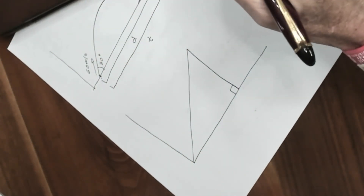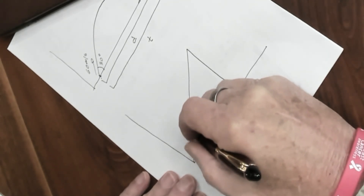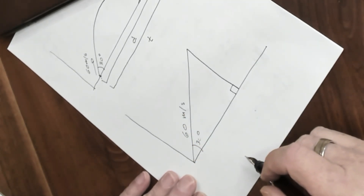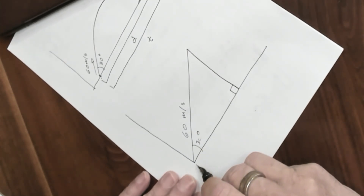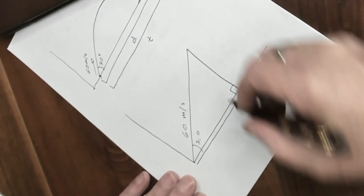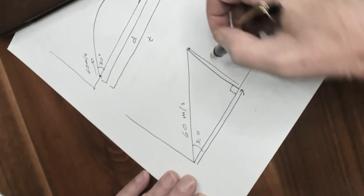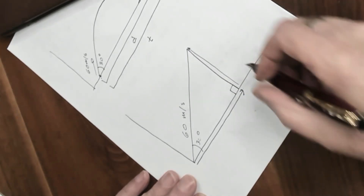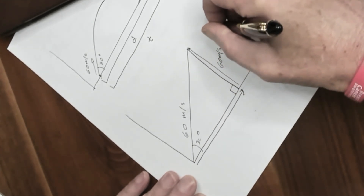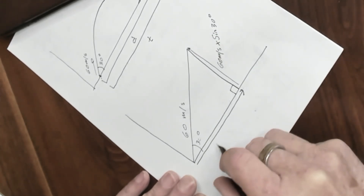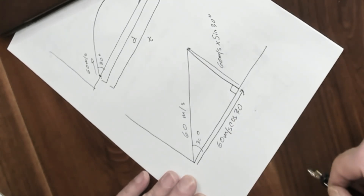The first step in solving this problem is writing down what you know. We know that this angle is 30 degrees and that this velocity is 60 meters per second. In order to solve the problem, we have to break this vector down into two components: a component in the x-axis and a component in the y-axis. The magnitude of the y-component is 60 meters per second times the sine of 30 degrees, and the magnitude of the x-component is 60 meters per second times the cosine of 30 degrees.